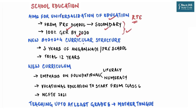NEP 2020 will replace the current 10+2 curricular structure with a new 5+3+3+4 framework: the first 5 years covering ages 3 to 8, the next 3 years covering 8 to 11, then 11 to 14, and finally 14 to 18 years. The rationale given by the government is that this will bring the hitherto uncovered age group of 3 to 6 years under the school curriculum, which has been recognized globally as the most crucial stage for development of mental faculties of a child. Pre-school education for that group shall be given in Anganwadi centers.